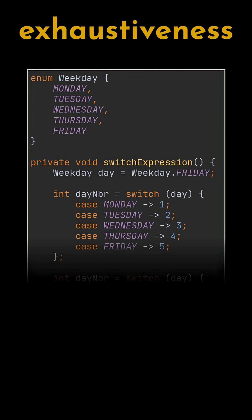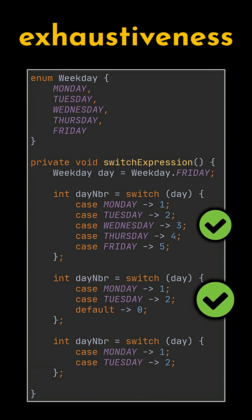Lastly, exhaustiveness is a key aspect of switch expressions. Unlike switch statements, which do not require covering all possible cases, switch expressions enforce that every possible case must be handled. If any case is missing, the compiler will insist that we address it, either by listing all cases explicitly or by providing a default fallback.